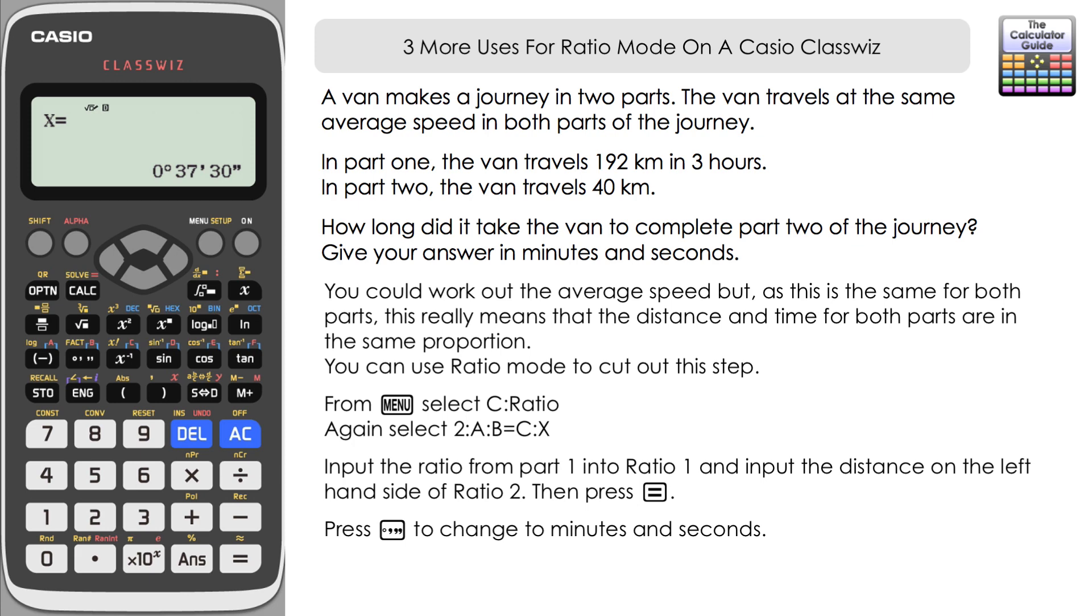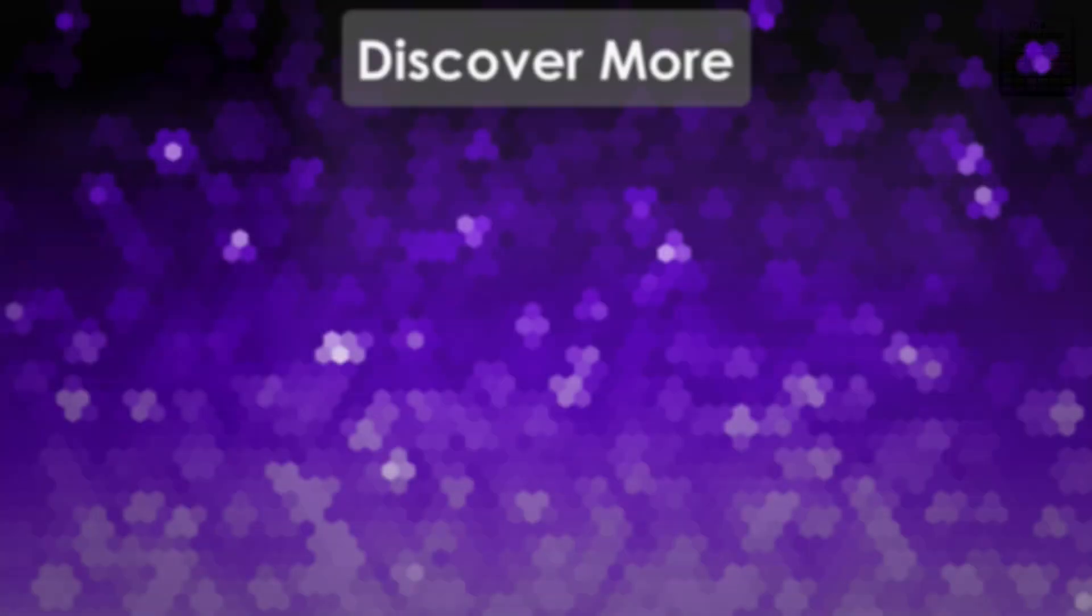So there we go. Three additional uses for ratio on a Casio ClassWiz. What you've got to look out for is questions that involve things that are in proportion with one another. If that's the case, then maybe you can use ratio mode to answer that quite quickly. Don't forget to like and subscribe for future videos. But that's it for this video. Thank you very much for watching, and I shall see you next time on The Calculator Guide.